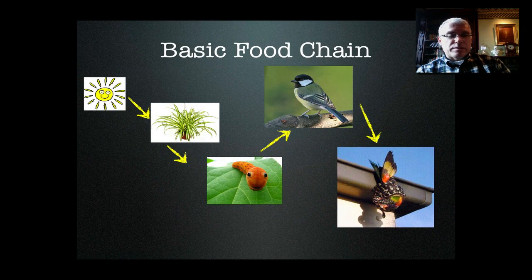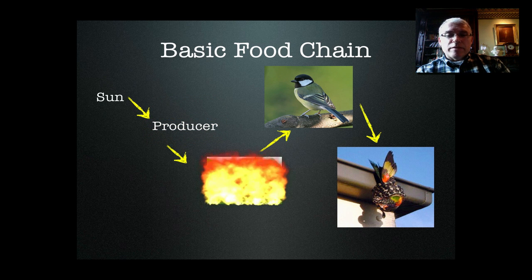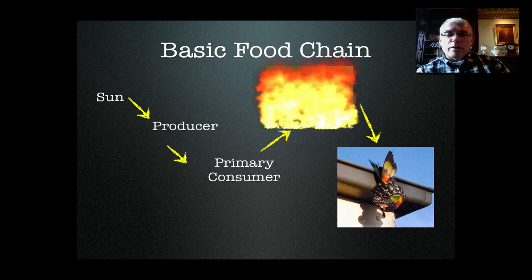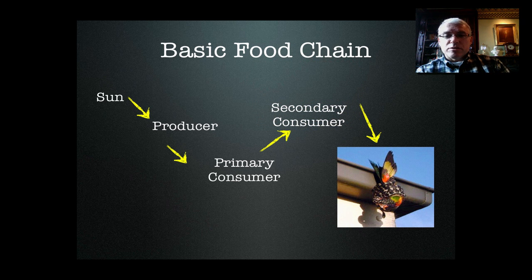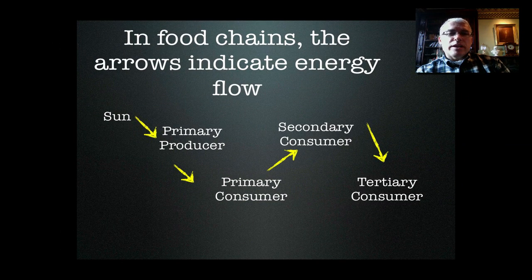We can look at this using some pictures. Here's a basic food chain with plants and some animals, and there's a name for each step. The sun is the original source of energy. The energy passes to plants, which are called producers. The first things that eat the plants are called primary consumers. Primary consumers then pass their energy to secondary consumers, and finally secondary consumers may pass some energy to a tertiary consumer. Most food chains are only three or four steps long, sometimes five or six, but that's rare. The arrows in food chains indicate the flow of energy through the ecosystem, from the sun to the producer to the consumers.